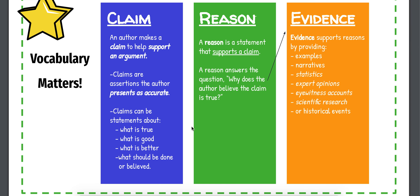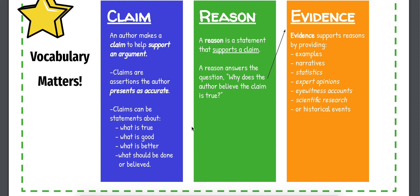Let's go over some vocabulary because the vocabulary matters with this. First, we're going to have to be able to identify the author's claim. An author makes a claim to support an argument. Claims are assertions the author presents as accurate. These can be statements about what is true, good, better, what should be done, or what should be believed. A reason is a statement that supports a claim — it answers the question: why does the author believe the claim to be true?